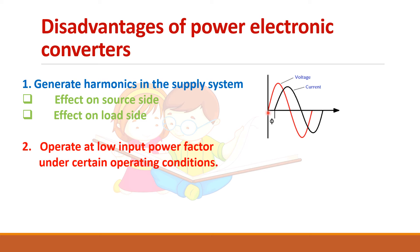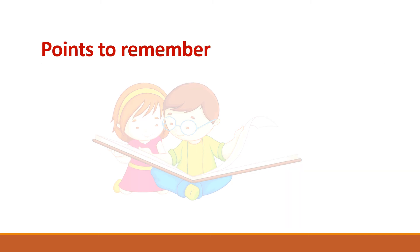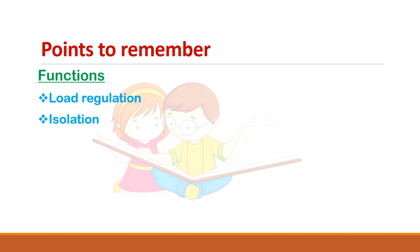The next disadvantage is that they operate at a low input power factor. Ideally we should have a unity power factor, meaning voltage and current should be in phase, but most power electronic operations have a phase difference. They also have low overload capacity — the power electronic device gets heated up easily. You can see the heat sink used to dissipate the heat generated in the device. If you overload it, it cannot withstand too much heat, so it has low overload capacity.